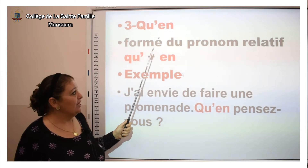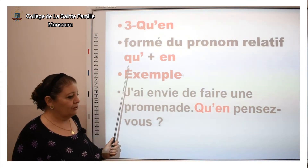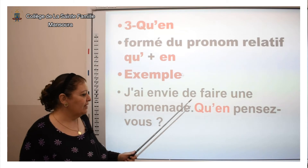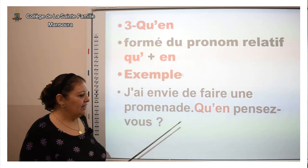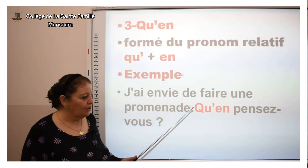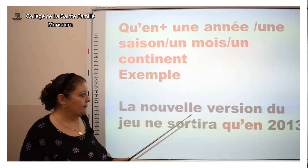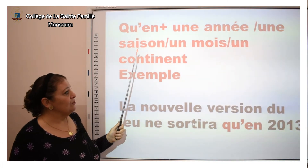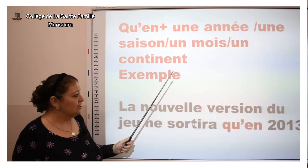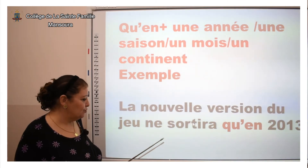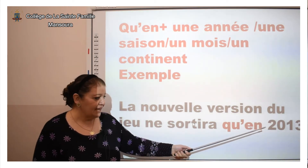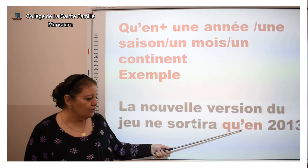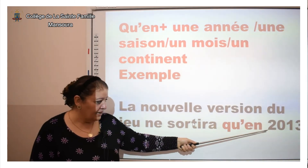« Qu'en » en deux mots est formé du pronom relatif « que » plus « en ». Exemple : « J'ai envie de faire une promenade. Qu'en pensez-vous ? » C'est-à-dire : que pensez-vous ? On utilise aussi « qu'en » en deux mots avec une année, une saison, un mois, un continent. Exemple : « La nouvelle version du jeu ne sortira qu'en 2013. » Parce qu'il y a une année, on met « qu'en » en deux mots — « que » plus « en » — car on met toujours « en » avant l'année.